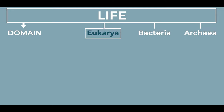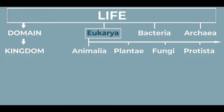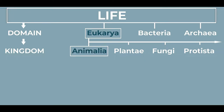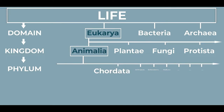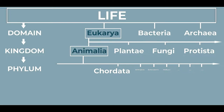The next taxonomic rank after domain is Kingdom. There are five or six different kingdoms, depending on sources, but since birds are animals, they fall into the kingdom called Animalia. Then below the kingdom, we have the phylum, of which there are approximately 31 in Animalia. For our purposes, we are only concerned with the phylum Chordata. We know that birds are vertebrates, and all vertebrates can be grouped into the subphylum Vertebrata.